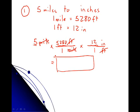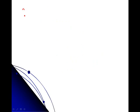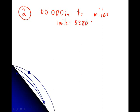Now, in a second example, we're going to use the same two conversion factors to convert 100,000 inches. And we're going to convert that to miles. And our two conversion factors were that 1 mile equals 5,280 feet, and 1 foot equals 12 inches. So, this time, our original measurement, the measurement we're starting with, are 100,000 inches.